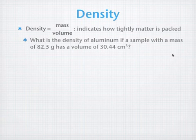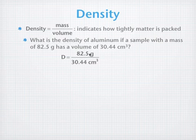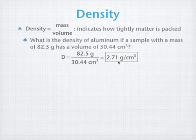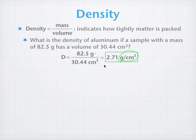As before, we're going to put the mass on top, the volume on the bottom, as the equation tells us. And we're going to get a density of 2.71. And again, the units, grams per centimeter cubed is the unit for density.